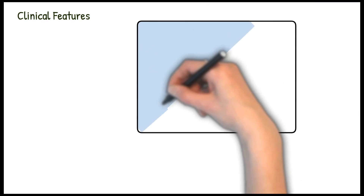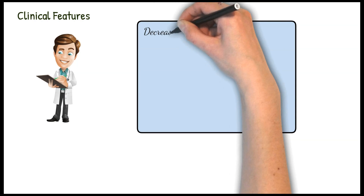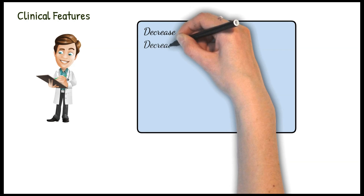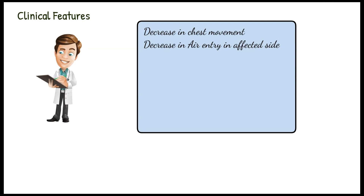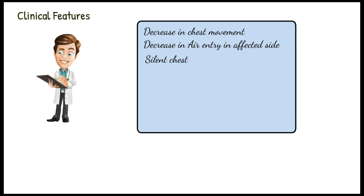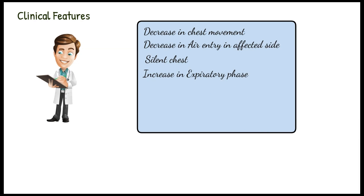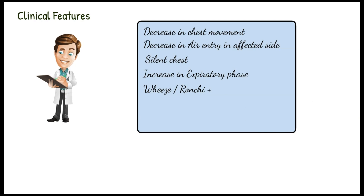Now we shall study the clinical features of intraoperative bronchospasm in tabulated form. There can be decreased chest movement on the affected side, and air entry can also be decreased. Sometimes bronchospasm is so severe it can lead to a silent chest. Because expiration is a passive process, there is an increase in the expiratory phase. Presence of wheezes and rhonchi on auscultation is also a clinical finding in patients with bronchospasm.